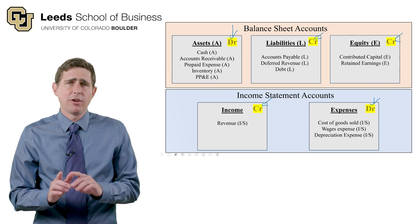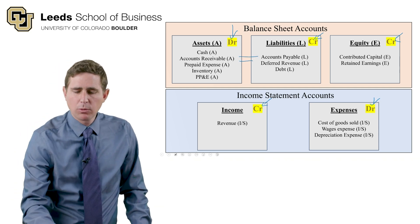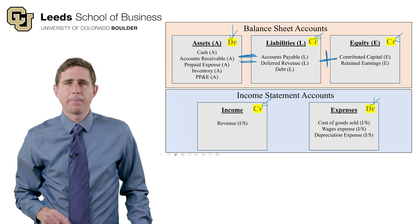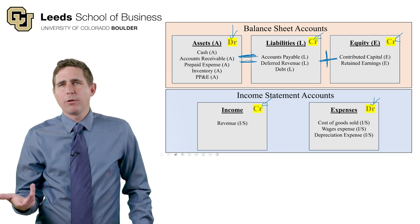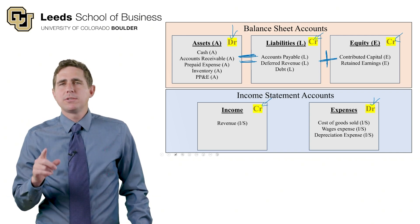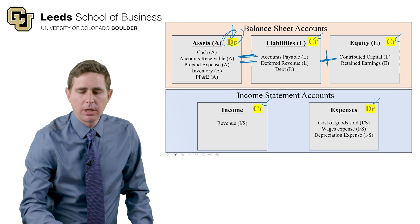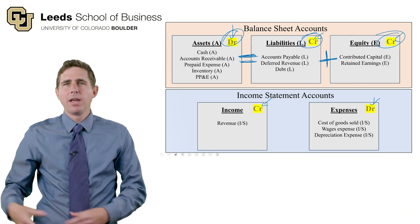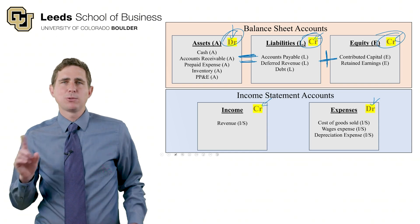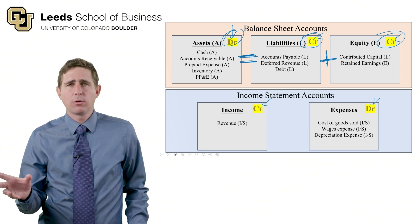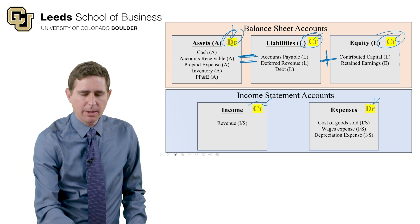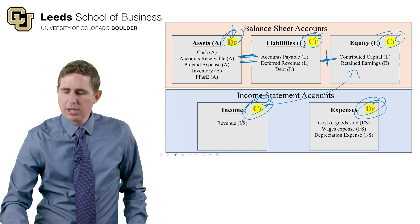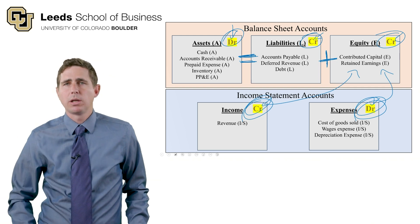Remember: assets equals liabilities plus equity. As long as debits equal credits, your balance sheet will stay in balance. That's because debit is on one side of the equal sign and credit is on the other side. Income accounts increase with a credit because they increase equity, and expense accounts increase with a debit because they decrease equity.